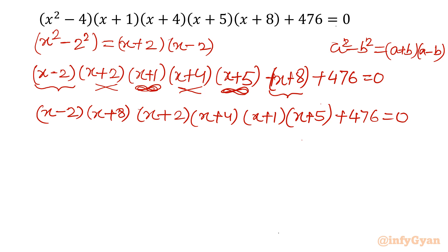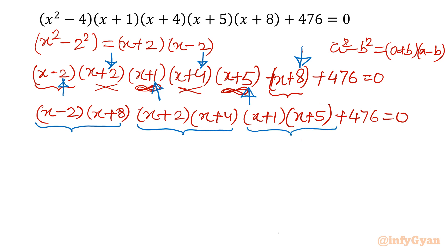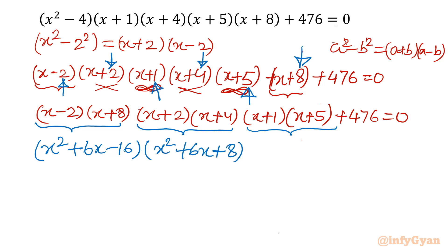The clue is in the numbers. The written numbers 8 and -2: 8 minus 2 = 6. Then 2 and 4: 2 + 4 = 6. And 5 and 1: 5 + 1 = 6. So each pair sums to 6 — that was our target. Taking the product of each pair: (x - 2)(x + 8) = x² + 6x - 16; (x + 2)(x + 4) = x² + 6x + 8; (x + 1)(x + 5) = x² + 6x + 5. We can see x² + 6x is common in all three brackets, plus 476 = 0.